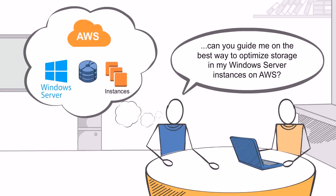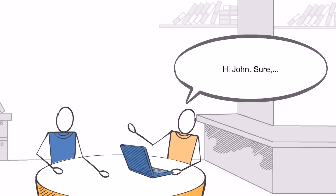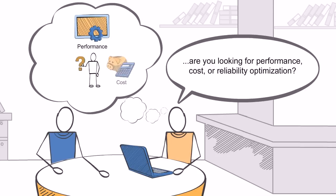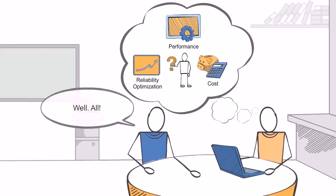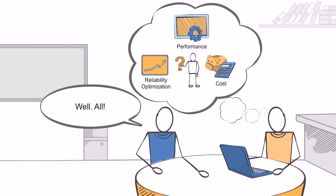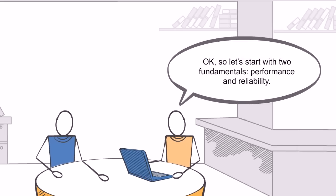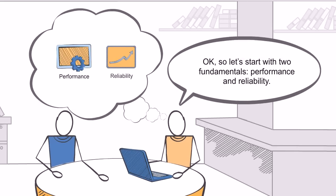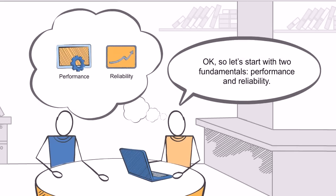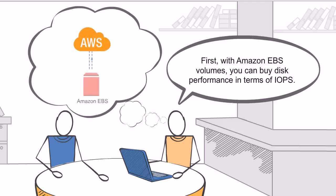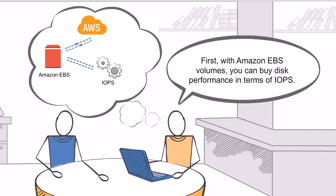Hi John, sure. Are you looking for performance, cost, or reliability optimization? Well, all. Okay, so let's start with two fundamentals — performance and reliability. First, with Amazon EBS volumes you can buy disk performance in terms of IOPS.